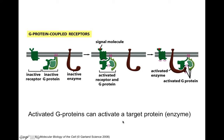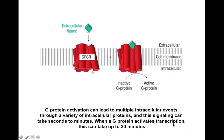Activated G proteins can activate a target protein or an enzyme. An extracellular ligand or signal can bind to a GPCR in the cell membrane, and this will cause a conformational change which will basically change the inactive G protein into the active G protein. G protein activation can lead to multiple intracellular events through a variety of intracellular proteins.